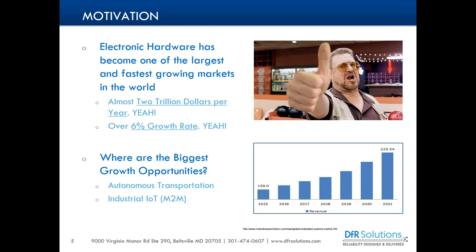Today we're going to talk about common mistakes that electronic design teams make. The motivation is a positive one — electronic hardware has really won. It is one of the largest and fastest growing markets in the world. Compared to furniture, cars, housing, food, and clothing, electronics is up there at $2 trillion a year. And not only is it one of the largest markets, it's still one of the fastest growing. A huge opportunity for all of us involved in electronic hardware.